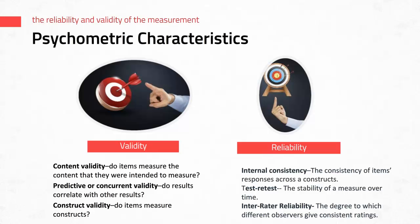It's important to note that there are all types of reliability and validity relevant to measurements you may choose for your quantitative research proposal. When considering psychometric characteristics, also note that it's important that measurements you choose are normed on the population you plan to study. For example, if you plan to study children but identify an instrument that has only been validated and used with adults, it may not have good psychometric characteristics for your population of children.